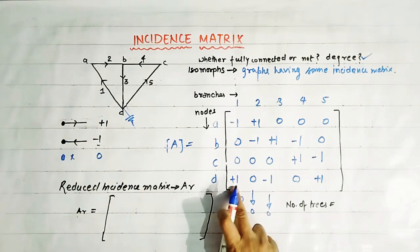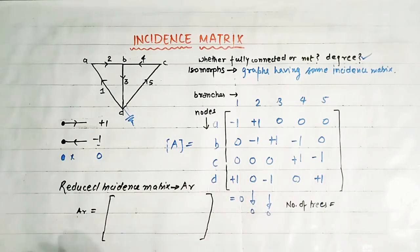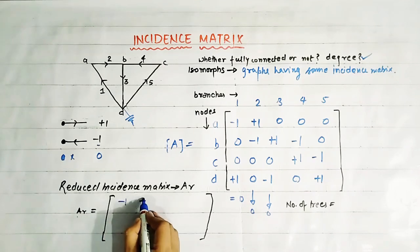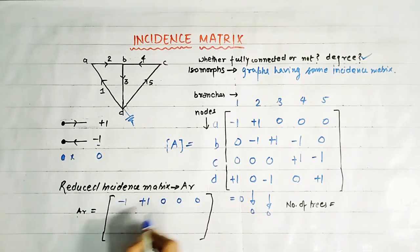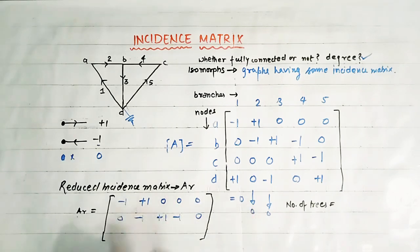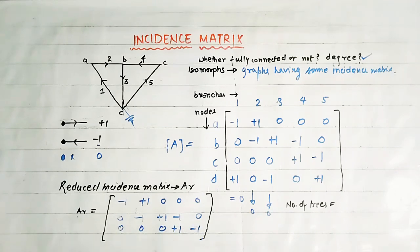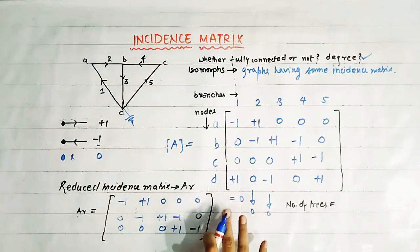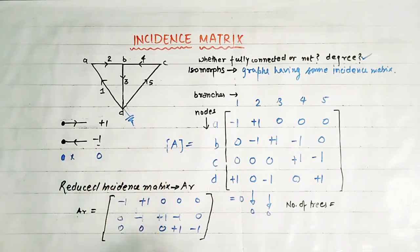Suppose we take node D as the reference node. Then we eliminate the row corresponding to D. The remaining matrix — with rows for A, B, and C — is: minus one, plus one, zero, zero, zero; zero, minus one, plus one, minus one, zero; and zero, zero, zero, plus one, minus one. This is the reduced incidence matrix.